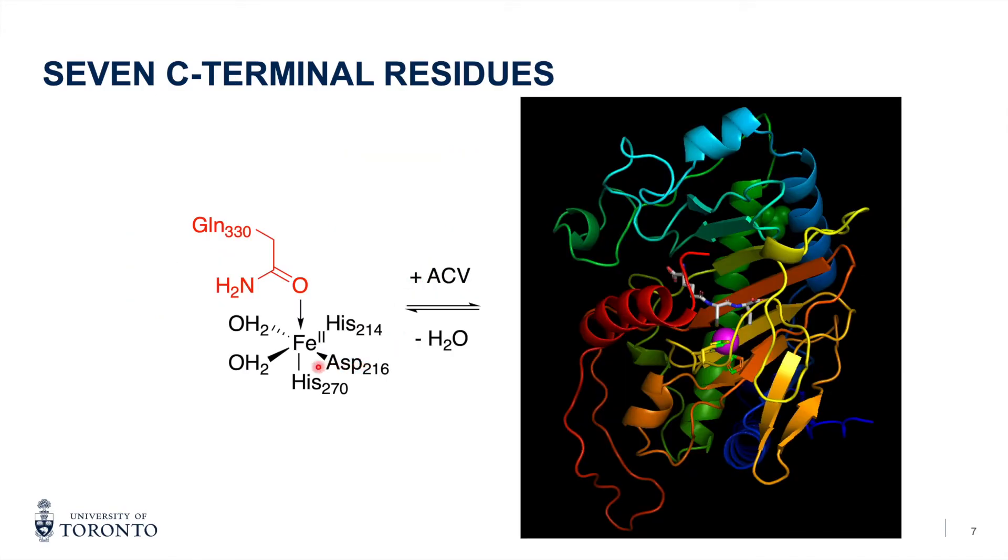And the reason this happens is, in the wild type, before the enzyme binds the substrate, a glutamine residue on the C-terminal tail is bound to the iron. And when ACV binds, you can see this is the facial triad here, and here's the ACV. The tail covers and shields the active site, preventing the reactive intermediates from reacting with other molecules.